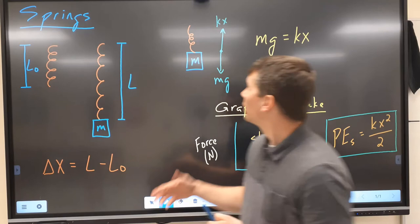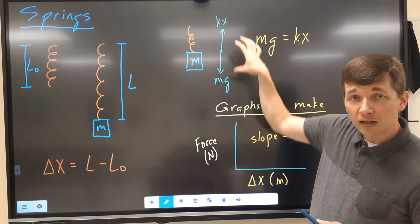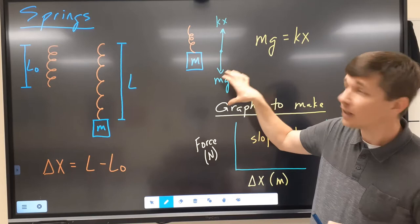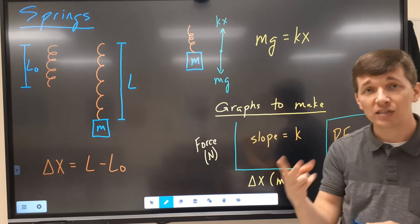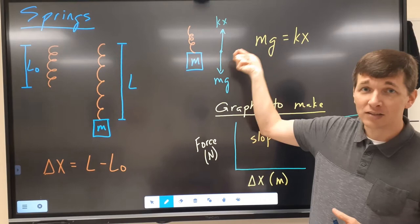The math behind this is that when we apply the mass and it settles out, the force of this spring is equal to the force of gravity. The weight of this mass is equal to the force of the spring, so mg is going to equal kx. On that second data table, when you are calculating the force being applied, the force is simply the weight of the mass — that mass times acceleration due to gravity.